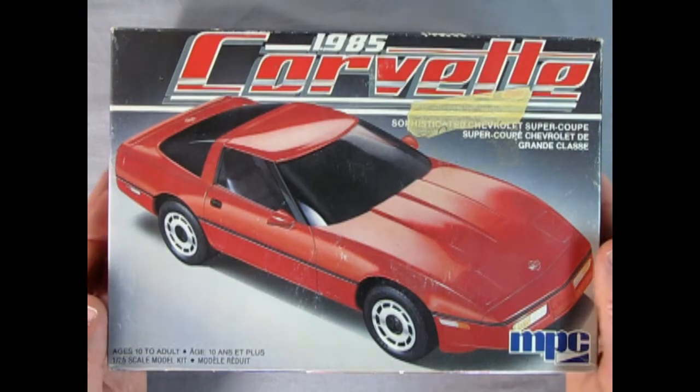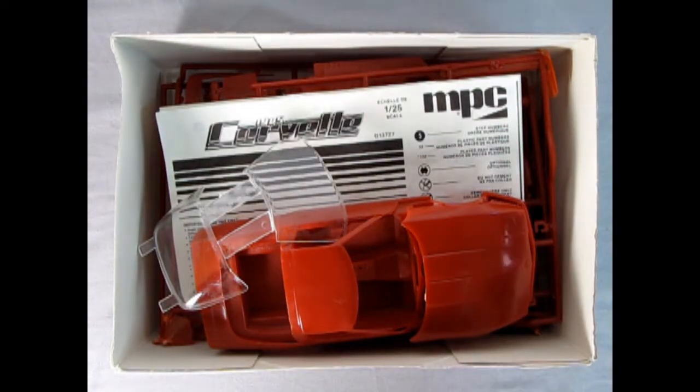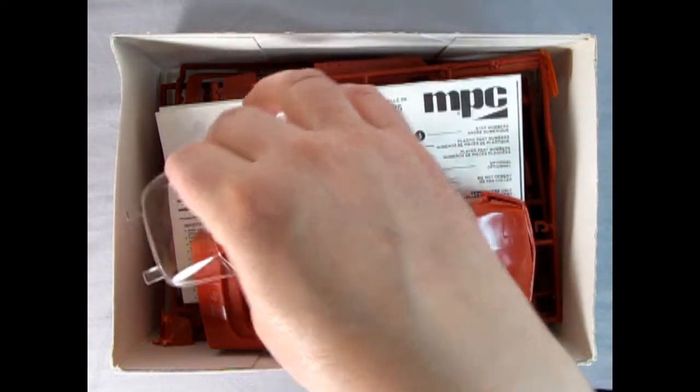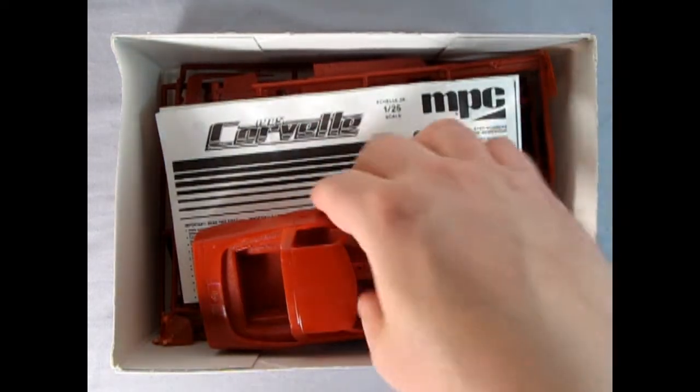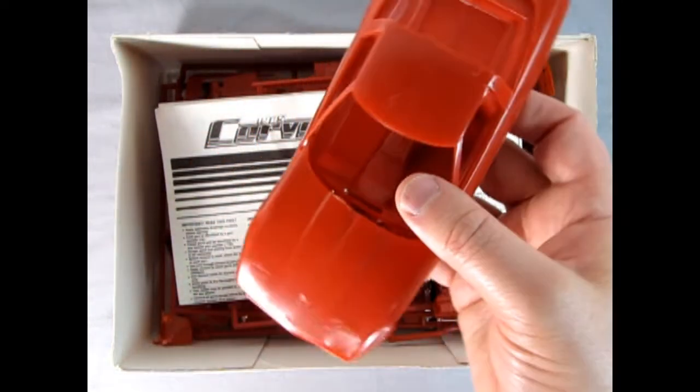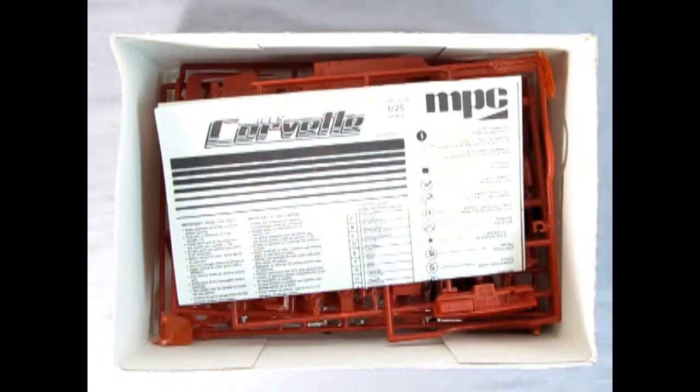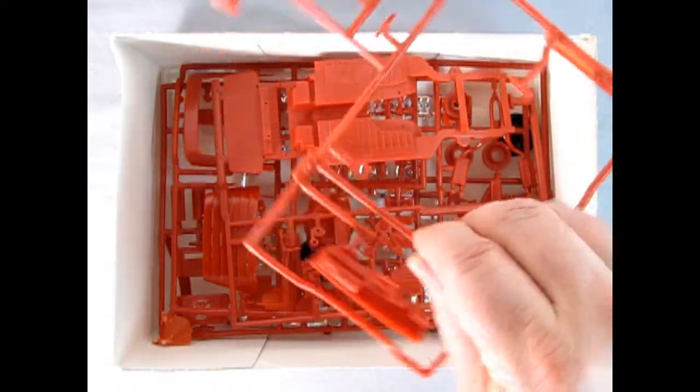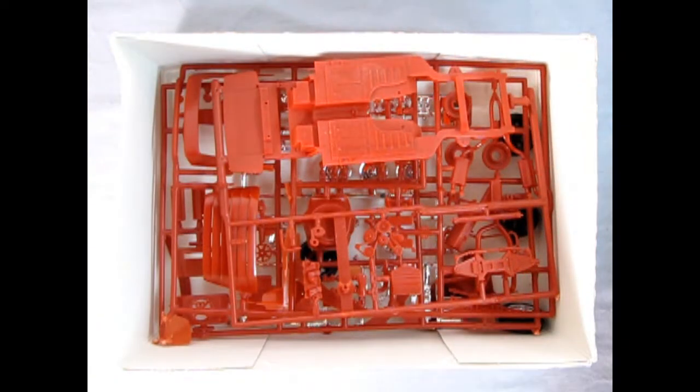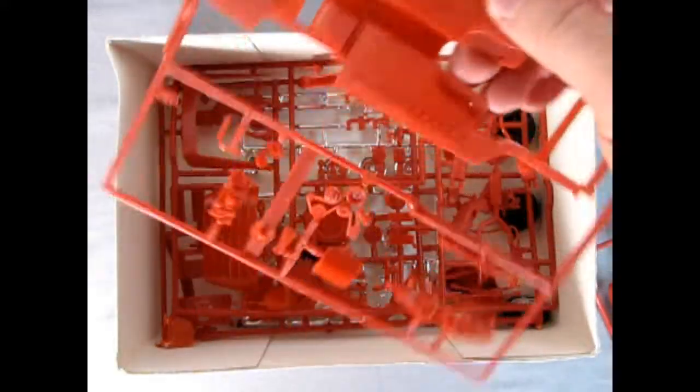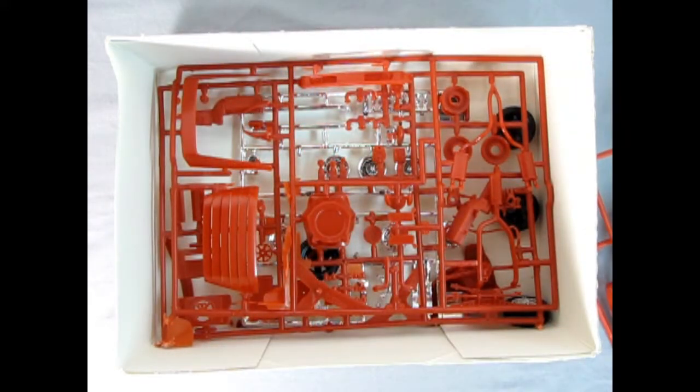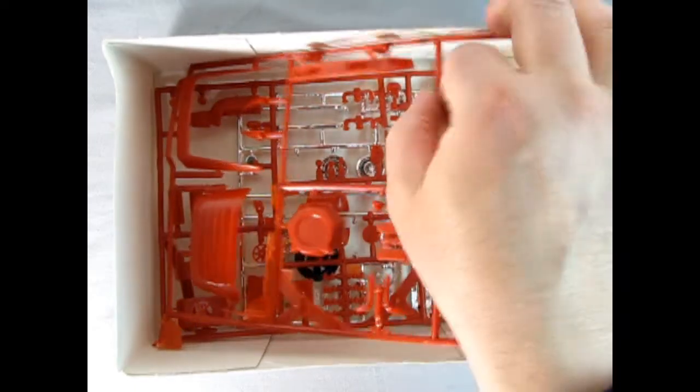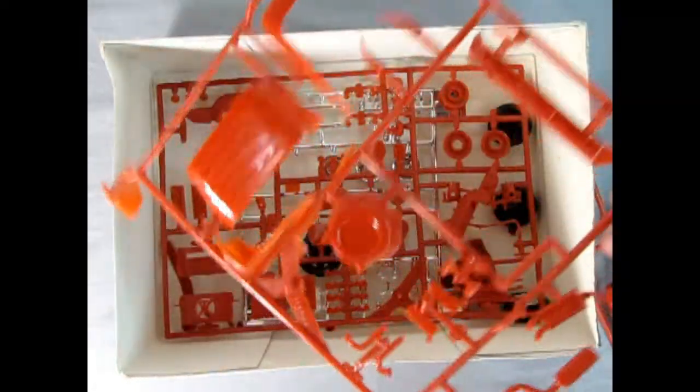Now taking the lid off our 85 Corvette, we're in for a nice little treat. Right away we see this famous red plastic. There's our glass, and there's the body with interior and the hood all put on. Here we have the Corvette instructions which Danny the dog will go over in a minute. There's our nice dashboard and all the red parts trees.